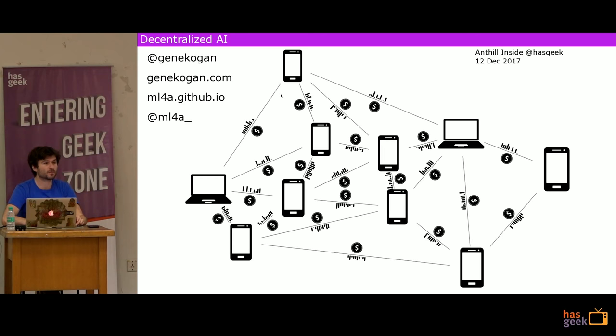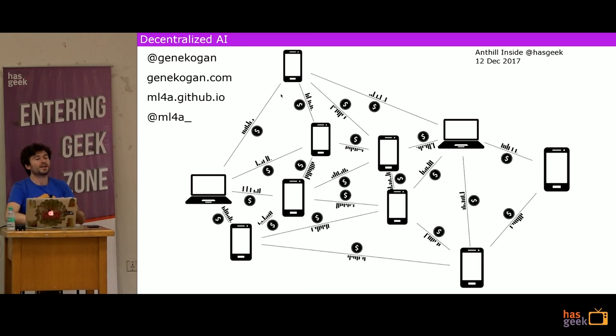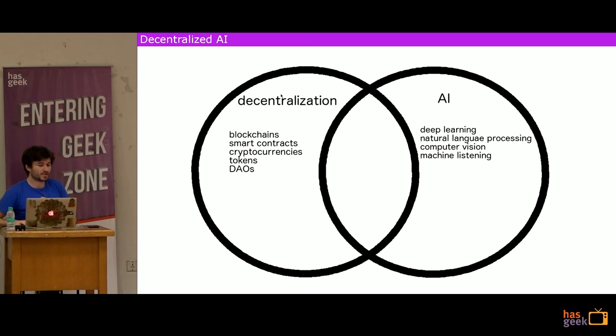I've been really invested in machine learning for a long time, and decentralization is a lot newer for me, but I'm quite excited and also nervous about the intersection of these two things. There's a sort of double buzzword syndrome happening here — both are very hot topics. It can be very hard to disentangle things that are actually interesting from the hype train you see in both. So I'm going to do my best to focus on real things.